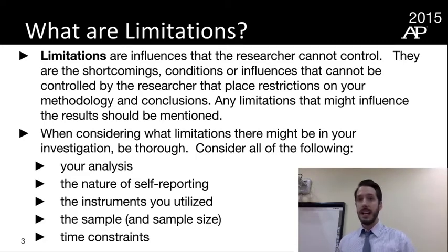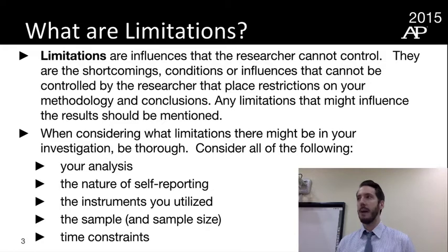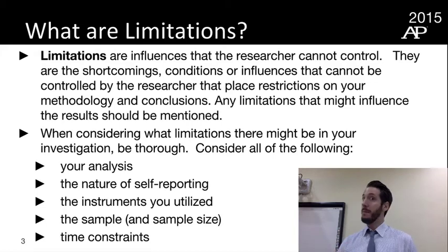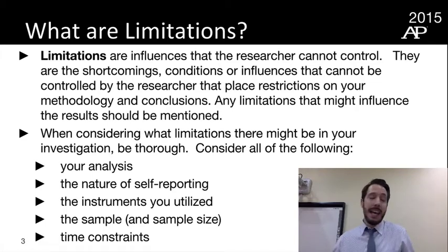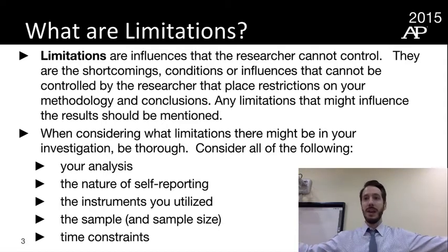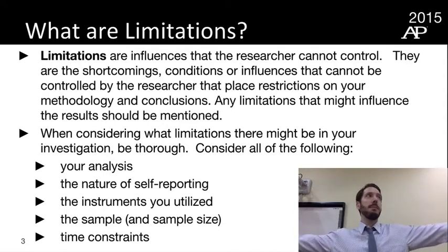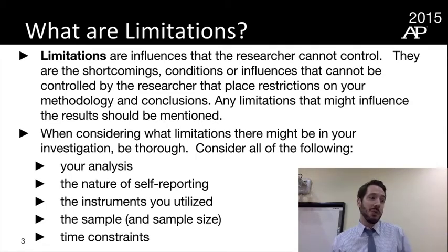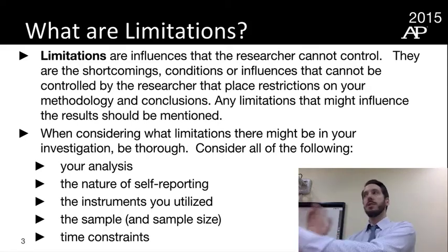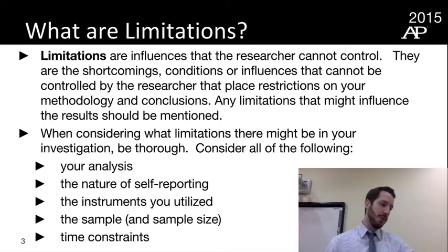Consider the instruments and resources you used — are they up to date? For example, one student did a biology-based research paper investigating bacterial growth on computers and keyboards in a computer lab. He didn't have an electron microscope to specifically identify all the different bacteria and pathogens, so he had to use a different method — that's a limitation. Also consider sample size: you could only look at 150 examples from one school's survey because you're a high school student without the time or resources to extrapolate further. And if you could, you'd monitor a phenomenon for six months, but you could only do it for six weeks — that's a time constraint. Those things just need to be noted.